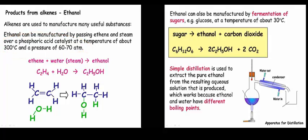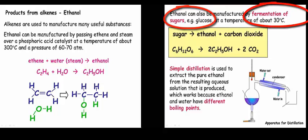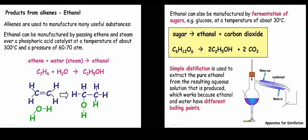The second method of production of ethanol is by fermentation of sugars, for example glucose. This takes place at temperatures of roughly 30 degrees C. Higher than this temperature and the enzymes used from the yeast in the fermentation process will be denatured.